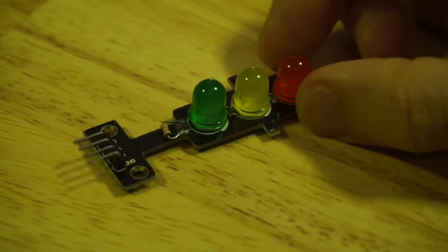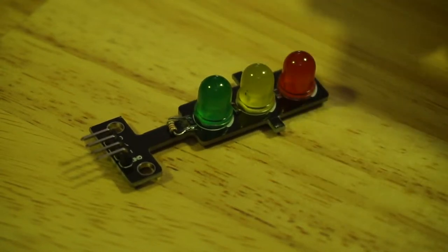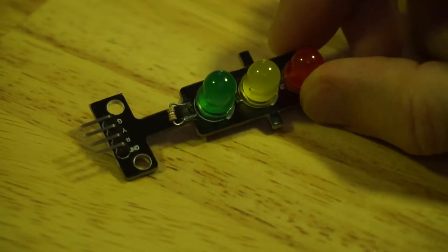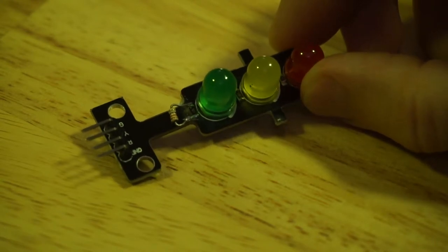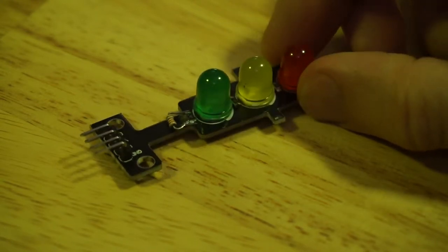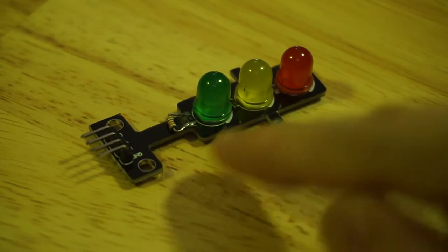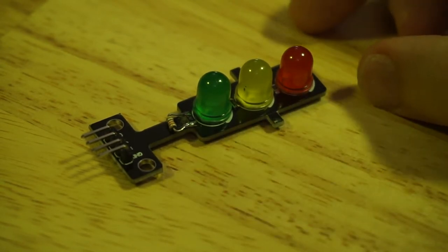This is one of the LED traffic light modules that Martin Davies was giving away on his channel. Unfortunately, this one did not arrive intact. It had snapped right at the neck. Something happened in transit. I don't know what Royal Mail are doing these days.